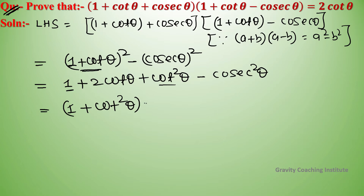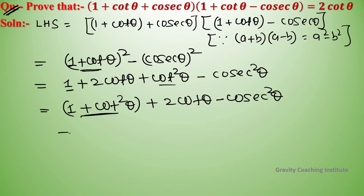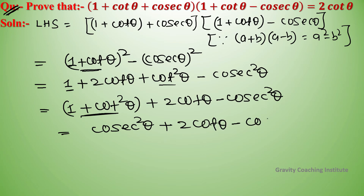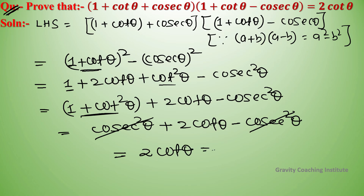Rearranging: 1 + cot²θ + 2 cot θ - cosec²θ. Since we know that 1 + cot²θ = cosec²θ, substituting gives cosec²θ + 2 cot θ - cosec²θ. The cosec²θ terms cancel, leaving 2 cot θ = RHS. Hence proved.